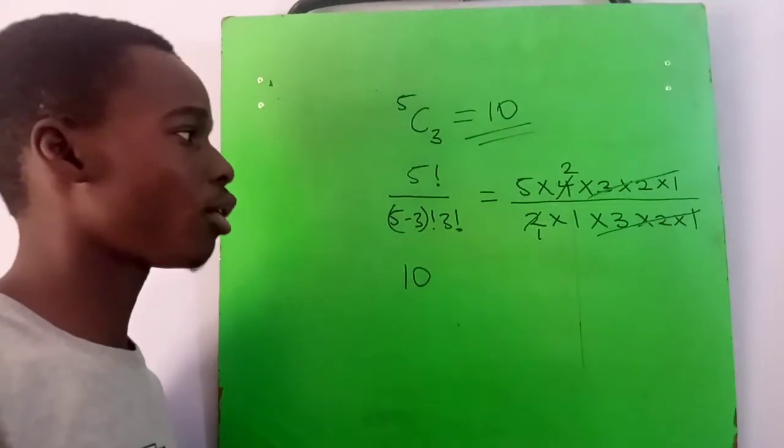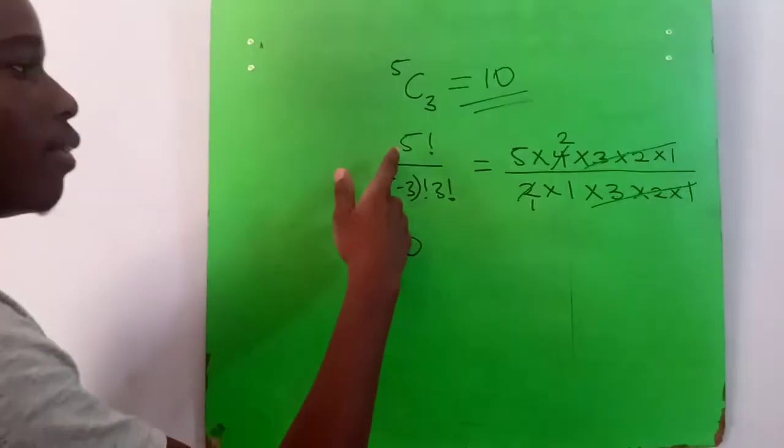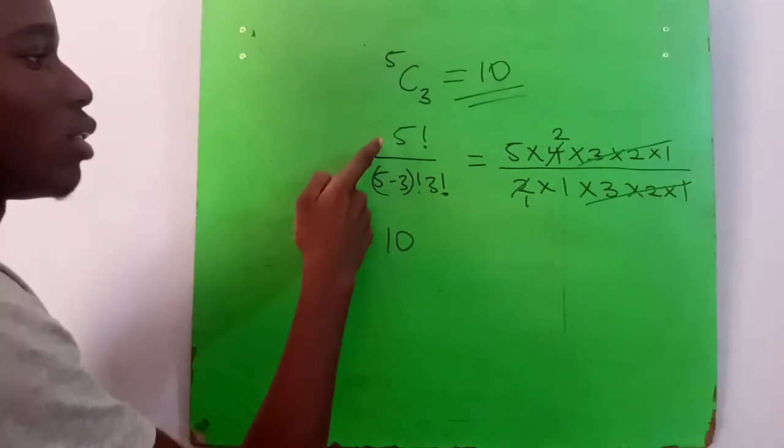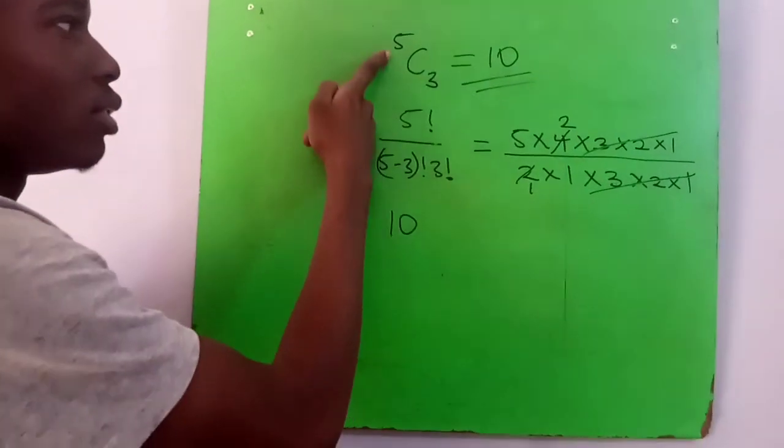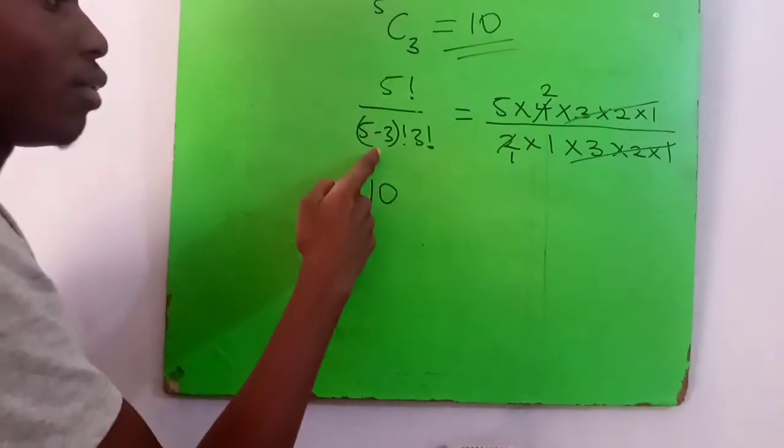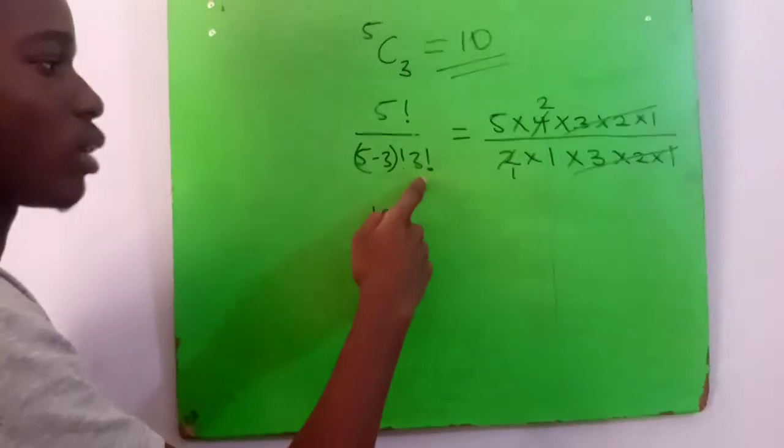This is how we solve combination problems. You pick this factorial over this minus this factorial times this factorial and you solve to get your answer.